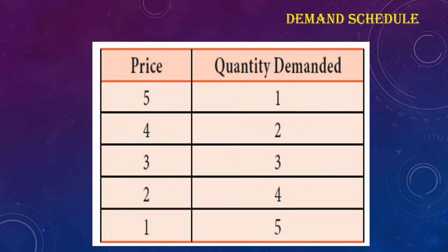Now look at the schedule given below. When the price falls from 5 to 4 to 3 to 2 to 1, the quantity demanded increases from 1 to 2 to 3 to 4 to 5. Price and quantity demanded are inversely related — when price falls, demand increases; when demand falls, price increases.